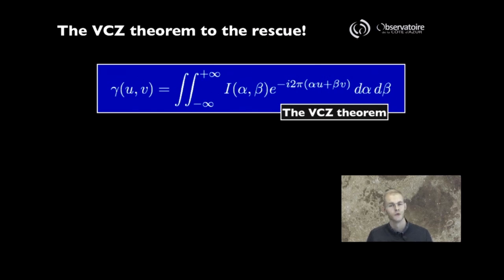In this case, we're going to use alpha and beta as our vertical and horizontal coordinates on sky.